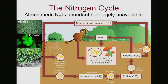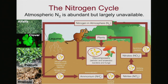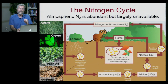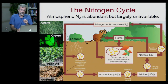Legumes have nodules in their roots that can fix atmospheric nitrogen and convert it into another form. Familiar legumes include alfalfa, clover, and peanuts. In those root nodules are what are called rhizobia — bacteria that do the work of taking N2 and converting it into ammonium. There are also free-living soil bacteria that can do the same thing.